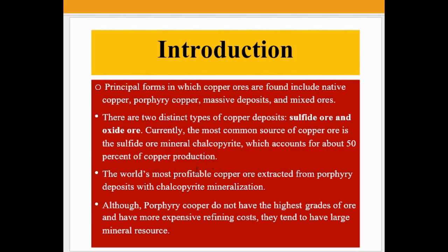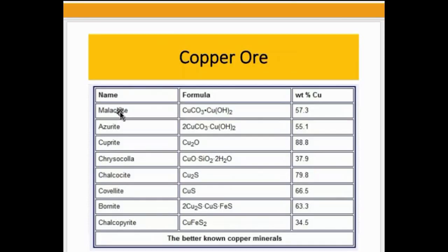The world's most profitable copper ore is extracted from porphyry deposits with chalcopyrite mineralizations. Although porphyry copper deposits do not have the highest grades of ore and have more expensive refining costs, they tend to have large mineral resources. The main copper ores are malachite with 57.3 percent copper and azurite with 55.1 percent copper.